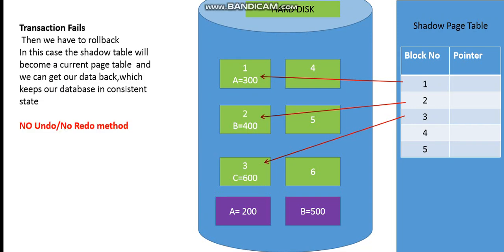When the transaction fails, we keep the shadow page table as it is, and the shadow page table is treated as the current page table. We roll back using this shadow table — it becomes the current page table, allowing us to get our original data back and keep the database in a consistent state. There is no undo and no redo, which is why this method is called the no-undo, no-redo method.